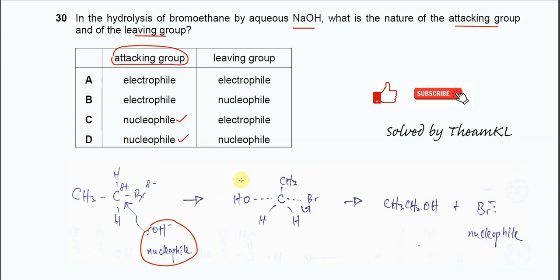After that, it will form this intermediate. The carbon forms a new bond with the oxygen and the C-Br bond is going to break. After the bond breaking, it will form the bromide and of course the ethanol.